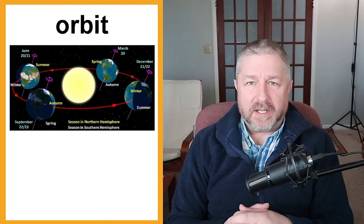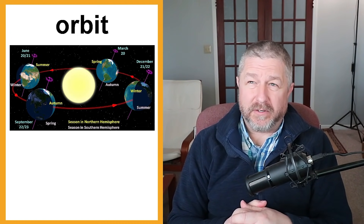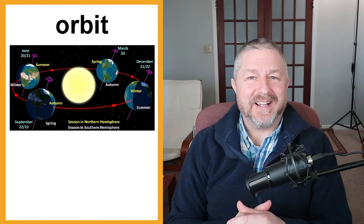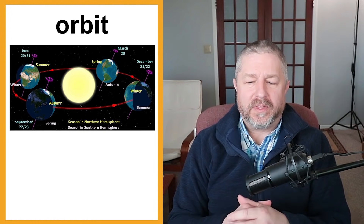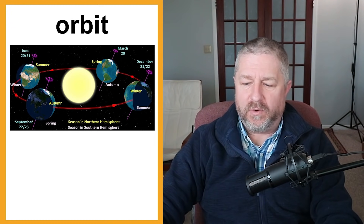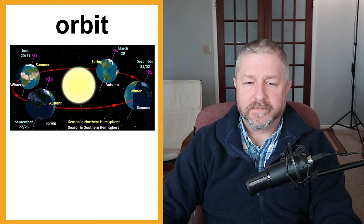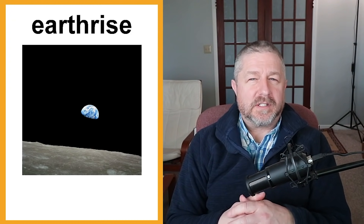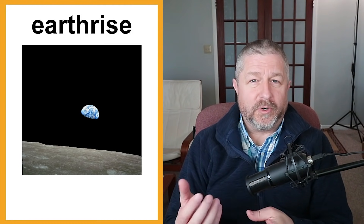The Earth orbits the sun. It takes approximately 365 days to orbit the sun, and we call this a year. The Earth not only spins on its axis but also orbits the sun — one complete orbit gives us a year. We also have sunrise: when the sun comes up we say it's sunrise, but if you were on the moon, you would see what's called Earthrise — you'd see the Earth rise above the horizon. If I get up early enough, I can see the sunrise. If you were on the moon and got up early enough, you would see Earthrise.